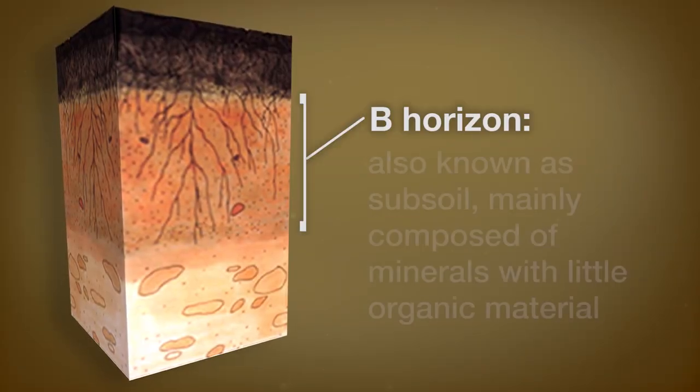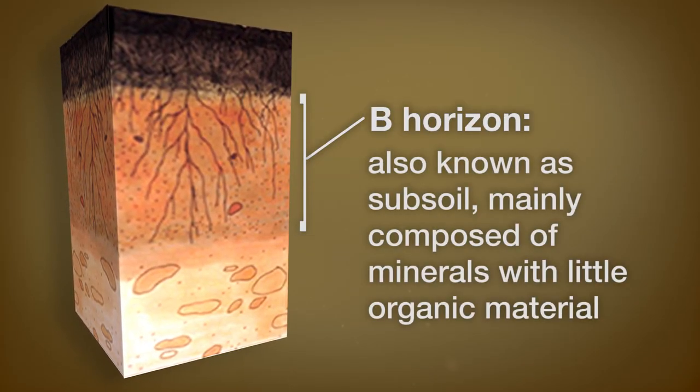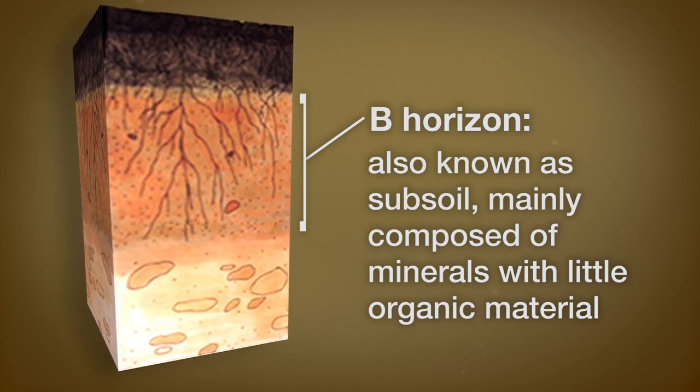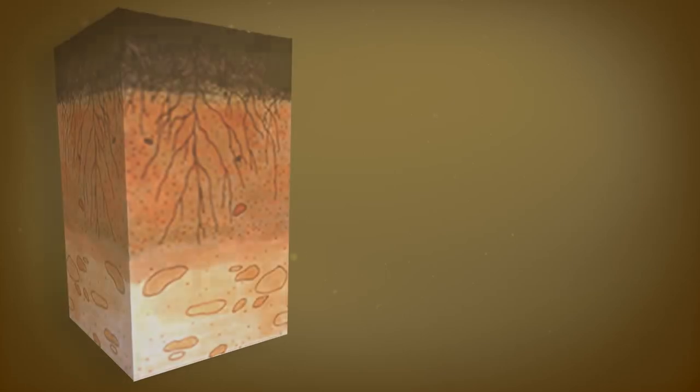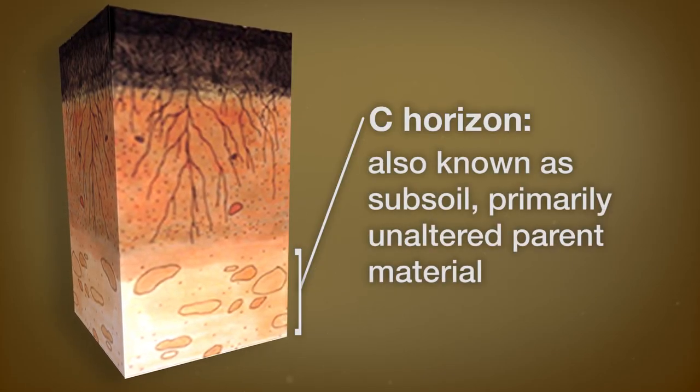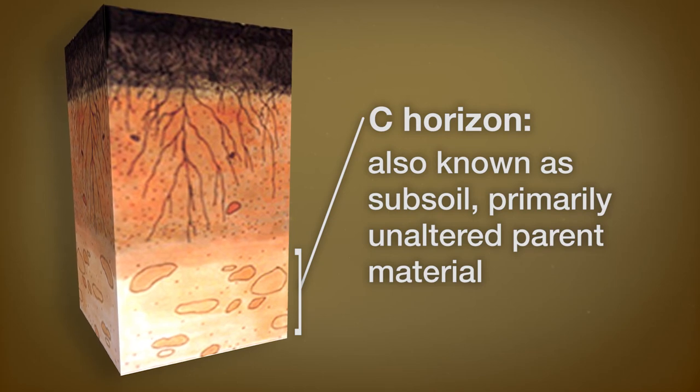Iron, aluminum, and dissolved organic acids from the overlying horizons are transported through and removed from the E horizon, then deposited in the B horizon. The B horizon is commonly known as subsoil and is composed primarily of mineral material with much smaller amounts of organic material. If there are nutrients in the soil, they will be present in the B horizon. The C horizon is the least weathered soil horizon and is very similar to the underlying parent material.